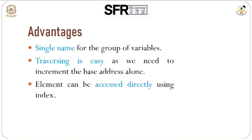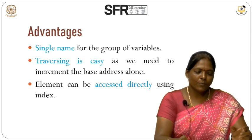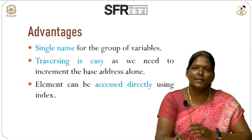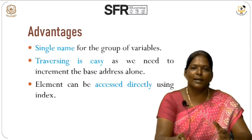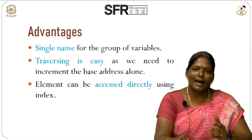The main advantages of using an array are: first, we use a single name for the whole array — an array can hold 1,000 or 10,000 or any number of elements under one variable name. Second, traversing throughout the array is very easy — from the base address, we increment by 1 (plus 1, plus 1) to access all the elements. Third, elements can be accessed directly using the index position.